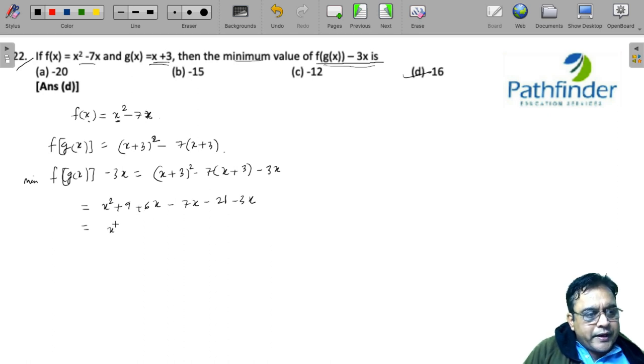So x² as it is, minus x minus 3x will give you minus 4x. And 9 minus 21 will give you minus 12.